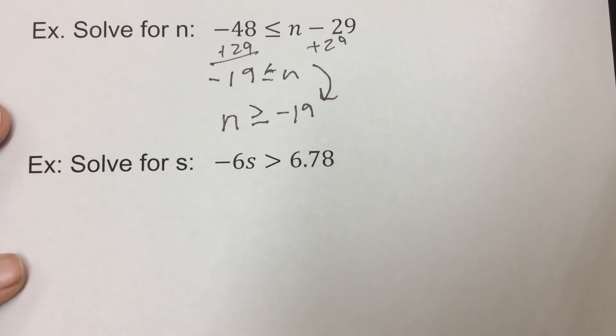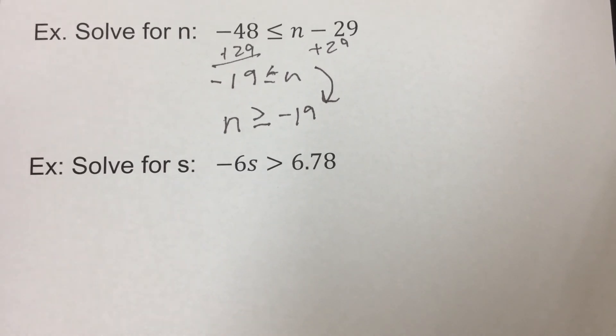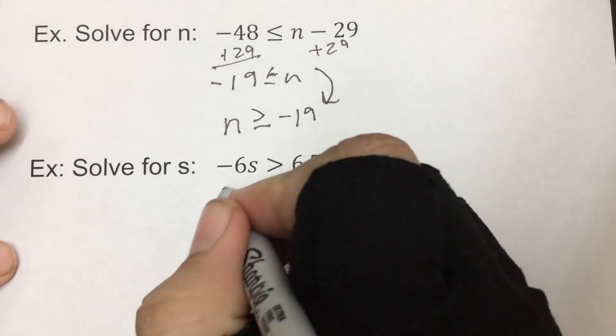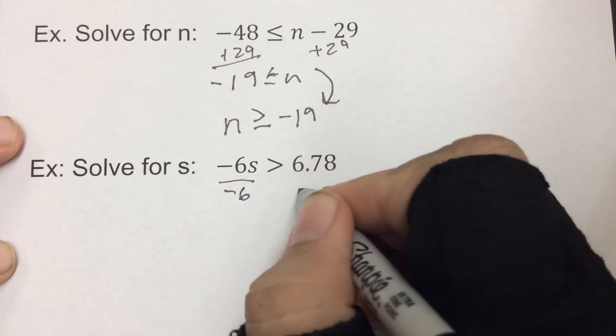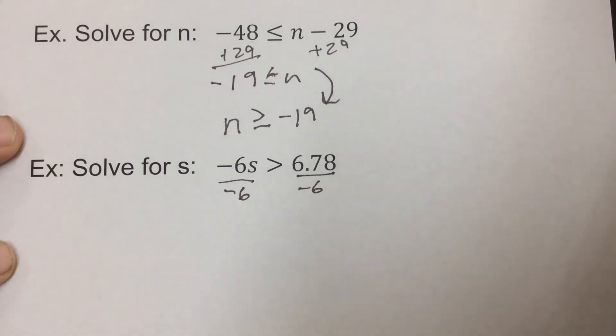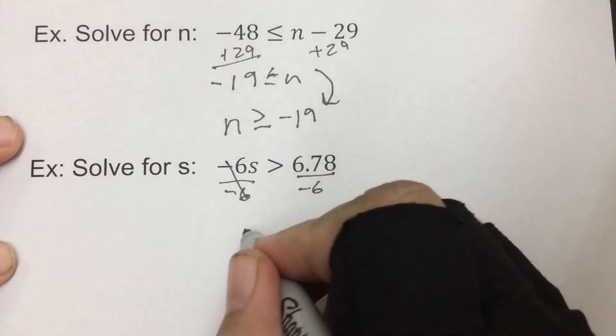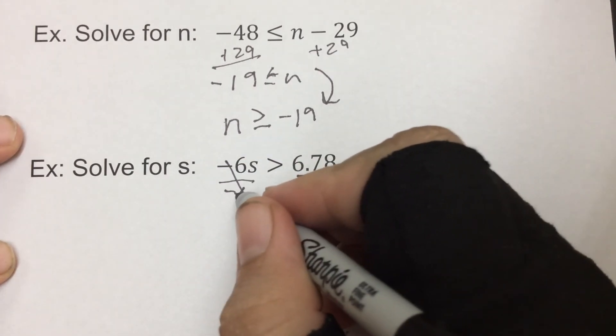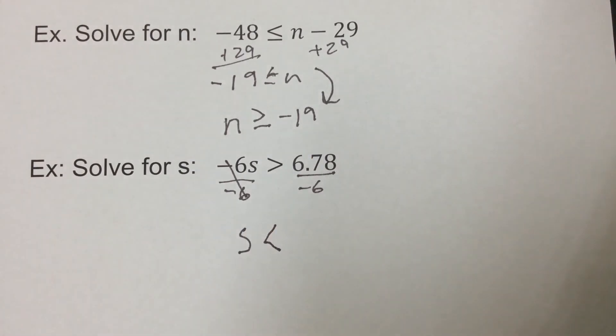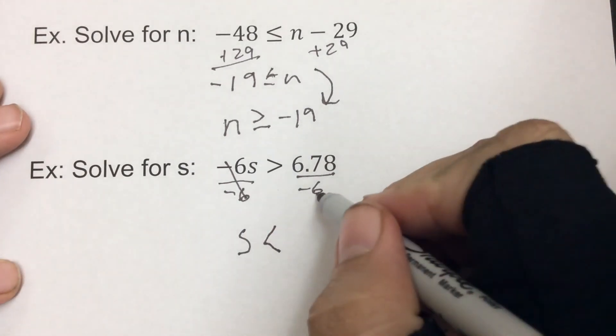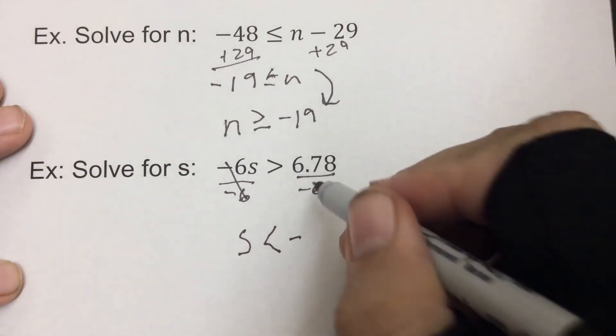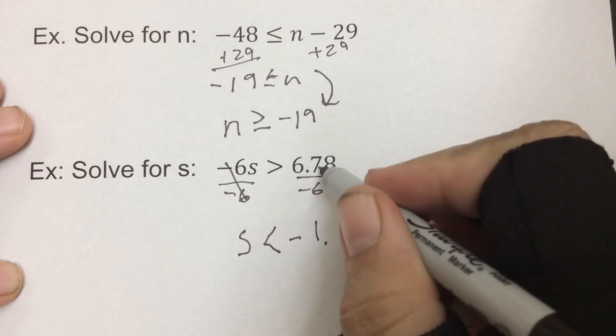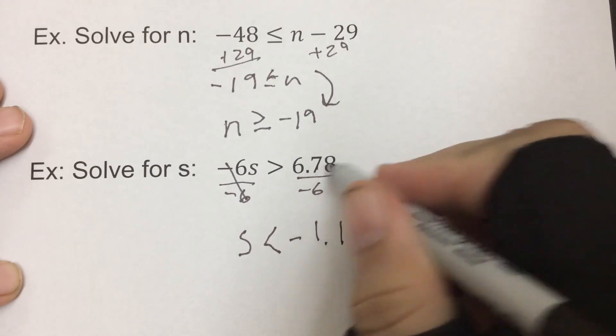Sorry about that, I was trying to get this done before the bell rang. Solve for s: negative 6s is greater than 6.78. Now remember, anytime you have a number and a letter, that means multiply. So we're going to divide by negative 6 to cancel. So we have s, but because it was dividing by a negative, this sign will switch from a greater than to a less than sign. Now if we divide this in, we're gonna have a positive divided by negative, which makes it a negative. But 6 goes into 6 once, 6 goes into 7 once, and then we have 18, which would be 3. And that's our answer.